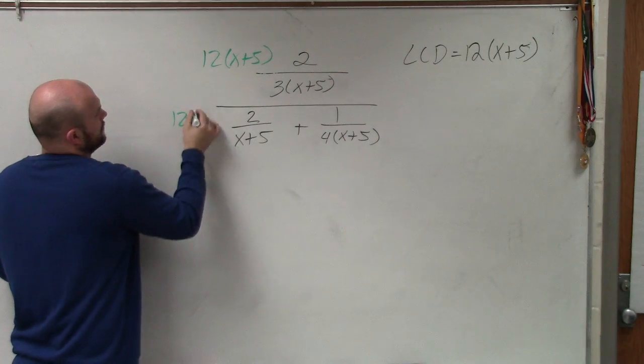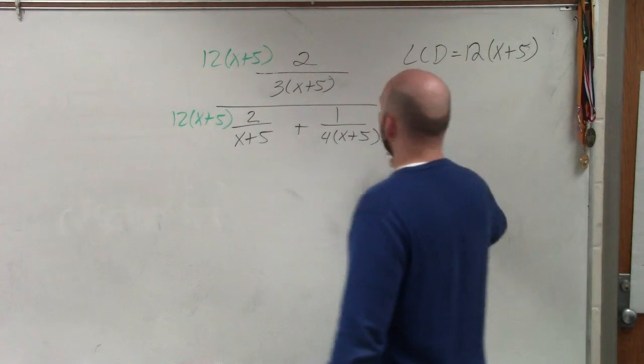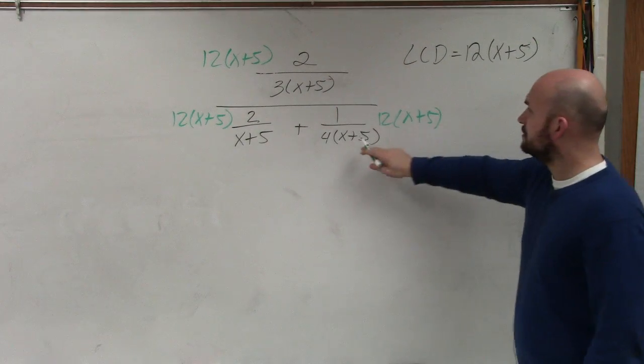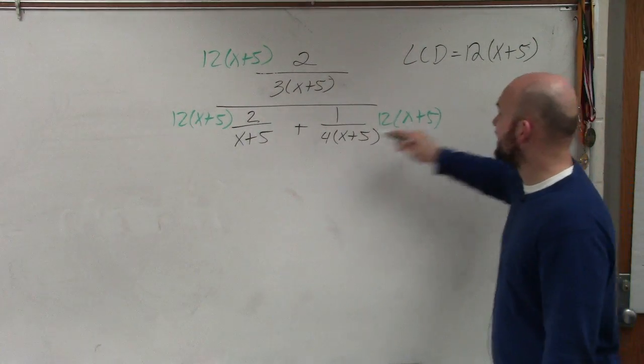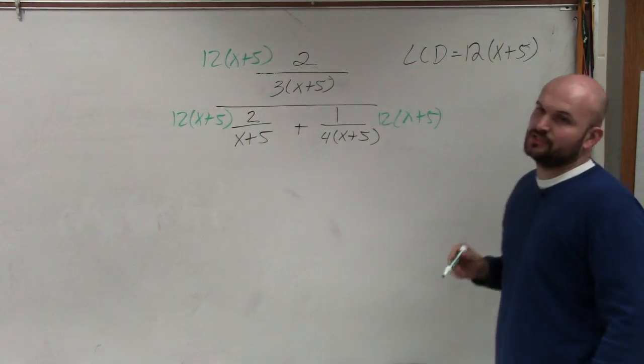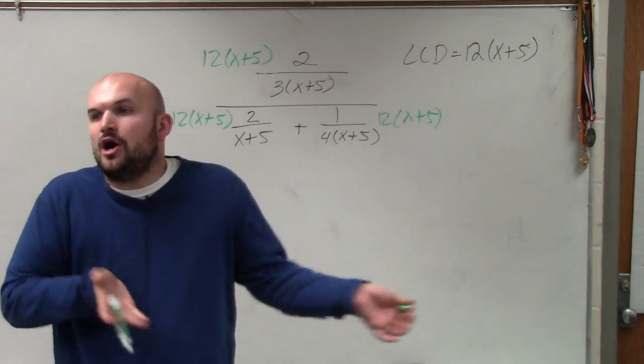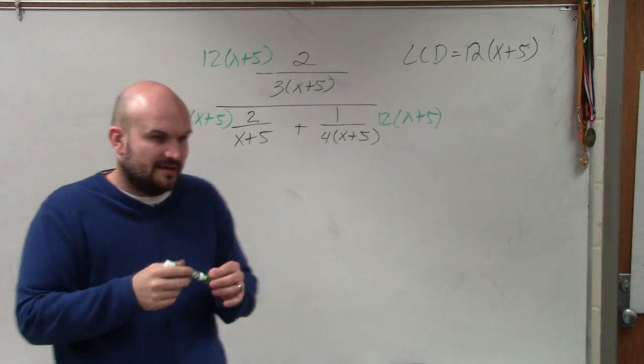Why? Because all of the terms, (x+5) divides into all of these, and 4 and 3 and 1 all divide into 12. Now that's what you want. You want your denominators to all be able to divide into your LCD.